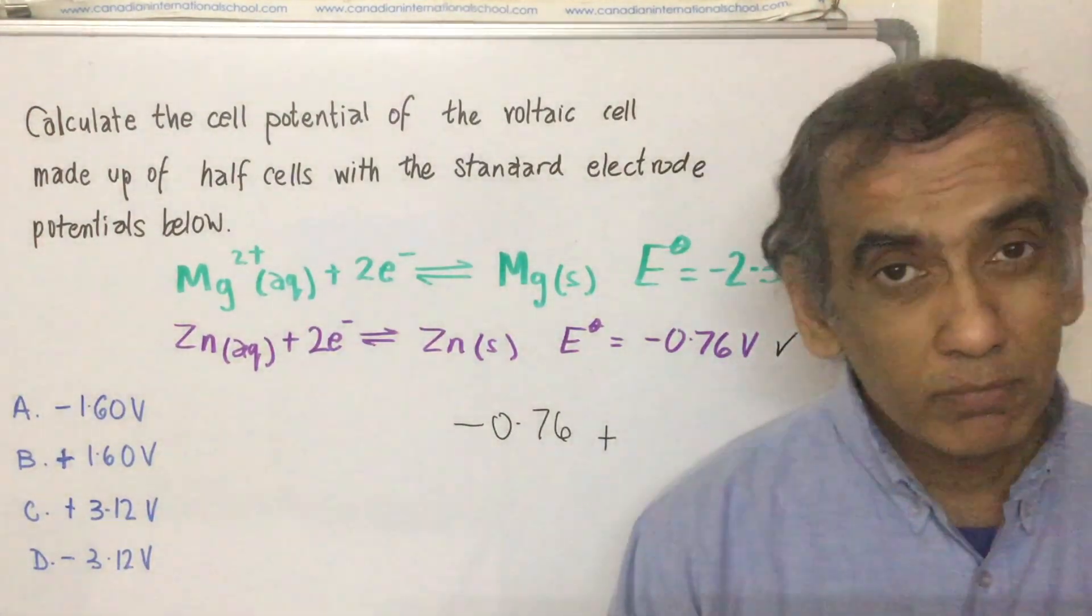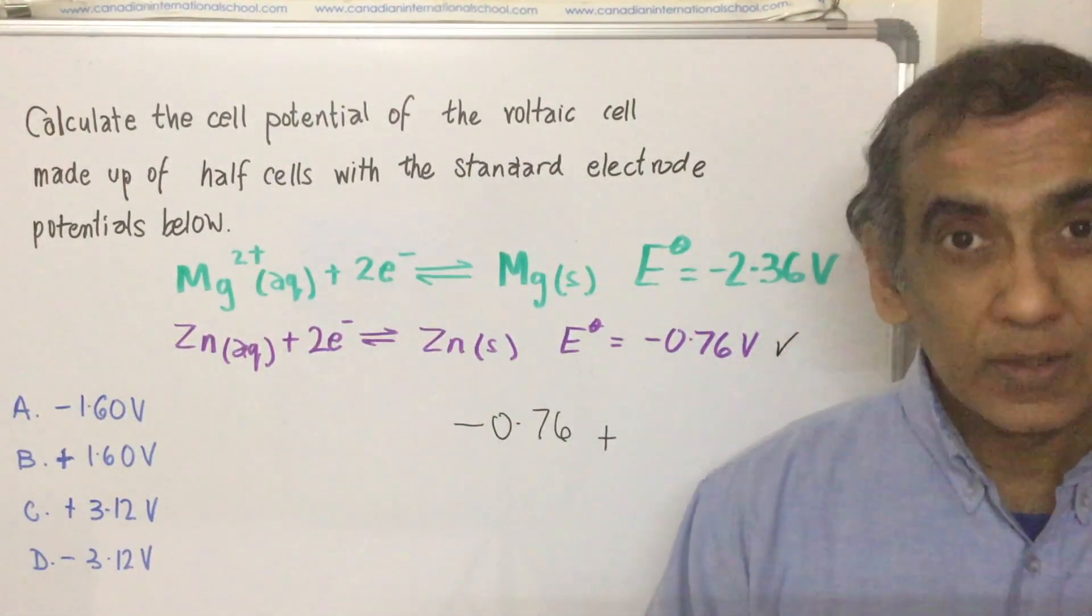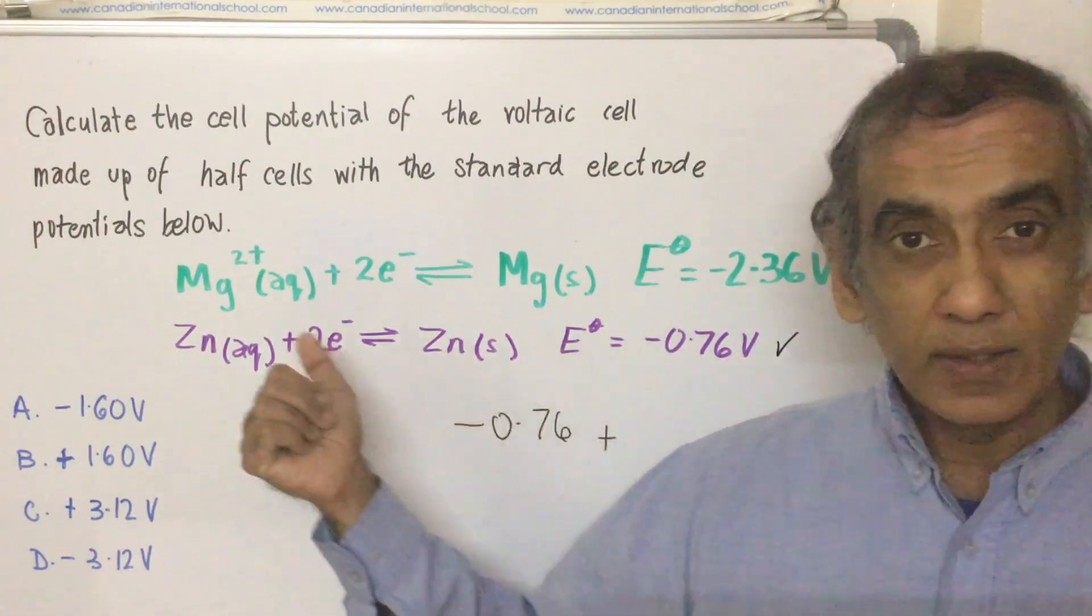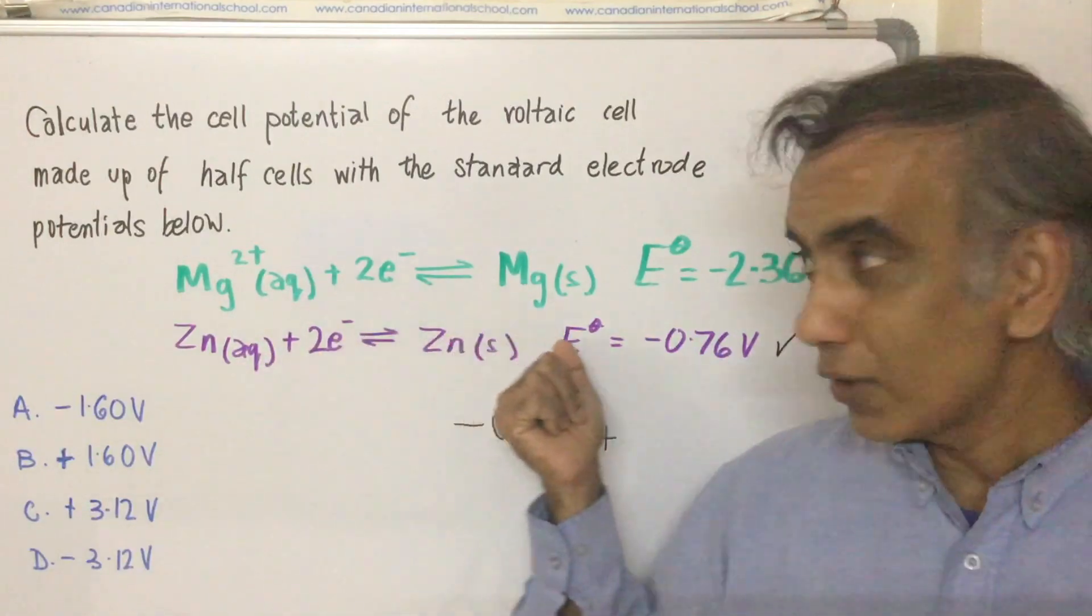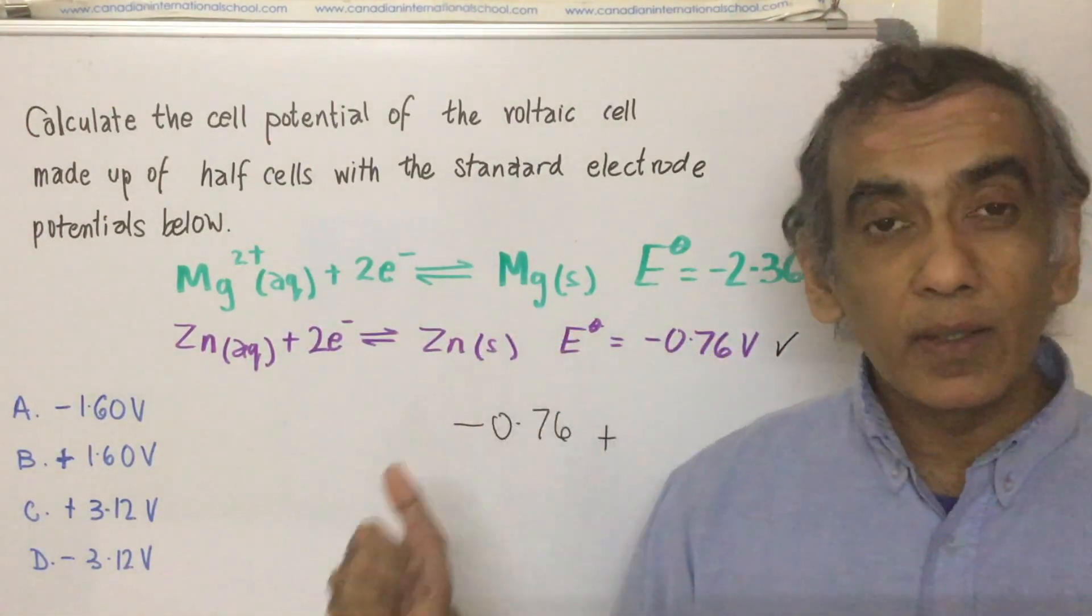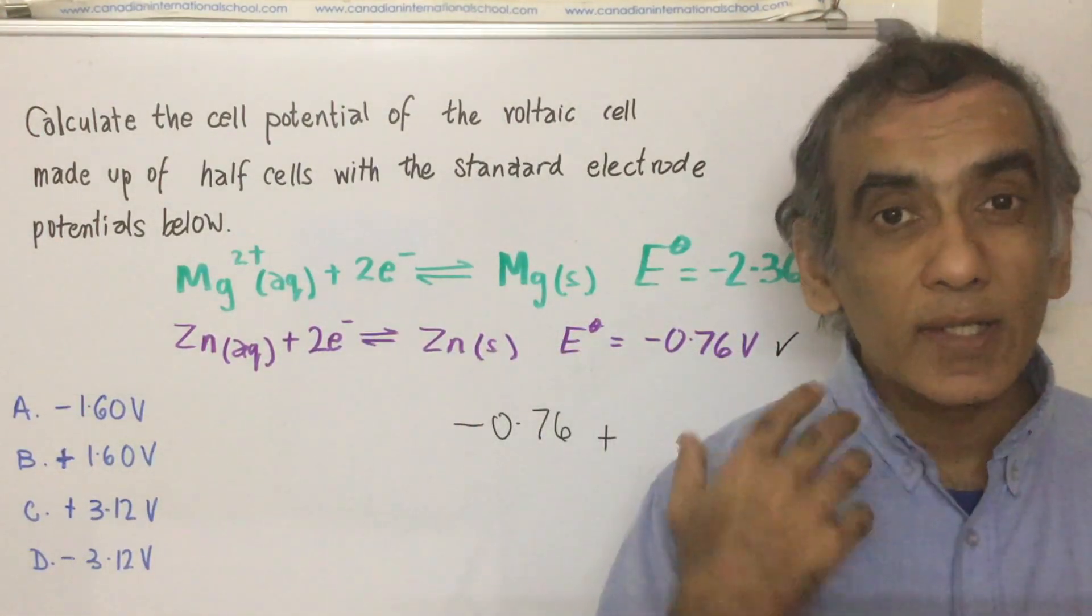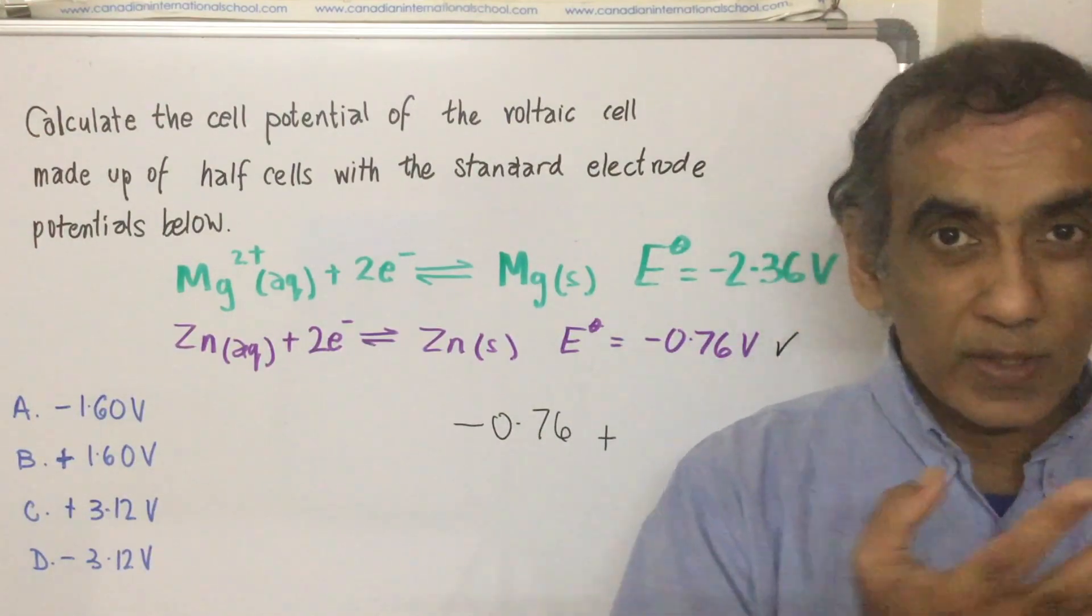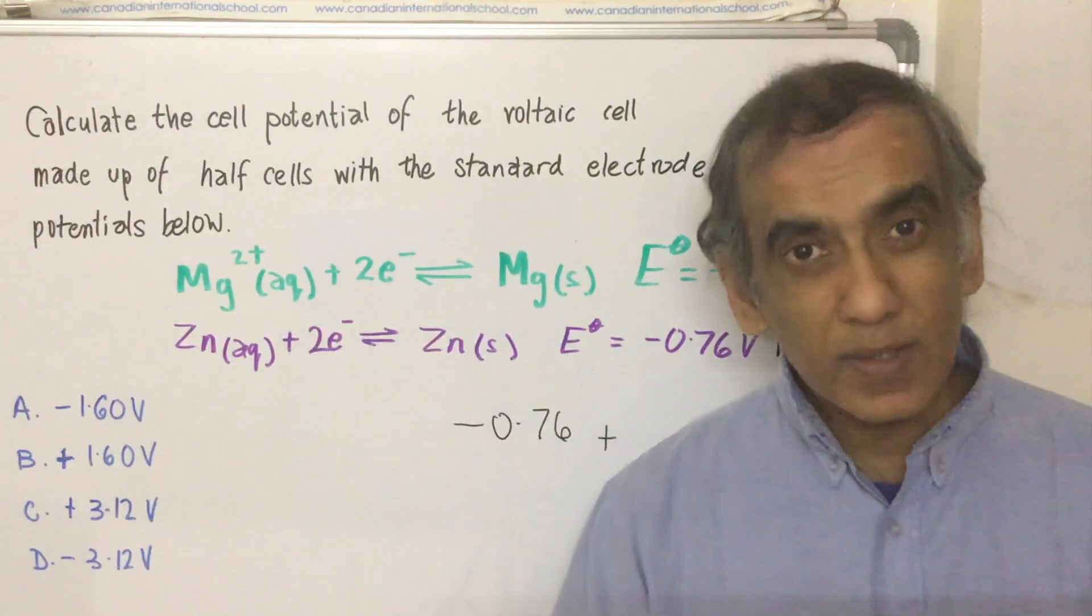Now you have to add that to the oxidation potential. And the other equation given is the electrode potential of magnesium, but you've got to figure out its oxidation potential because in a voltaic cell something is oxidized, something is reduced.